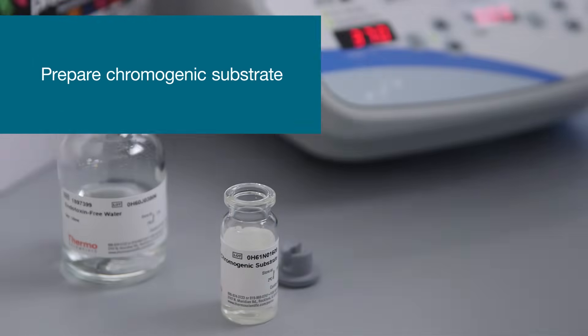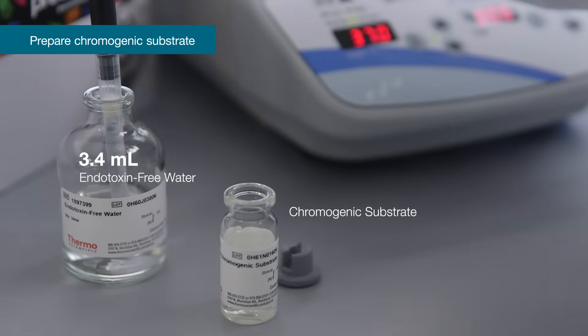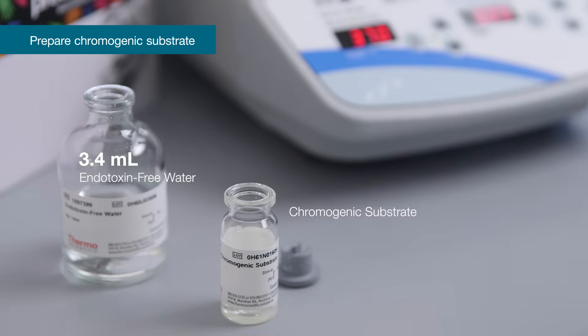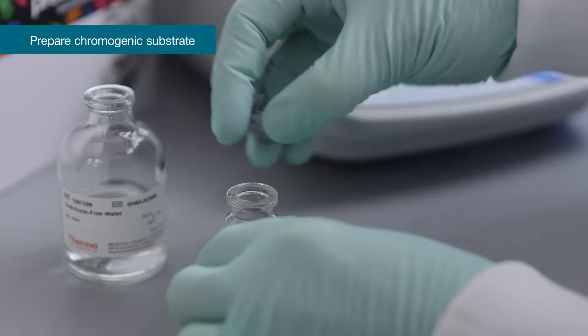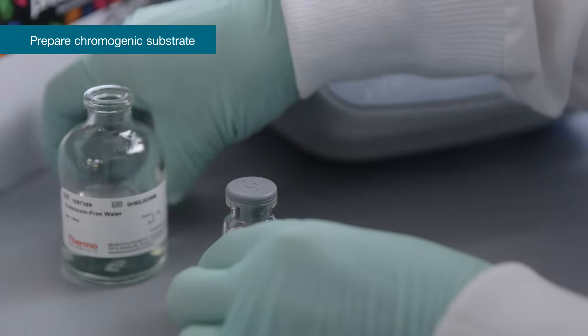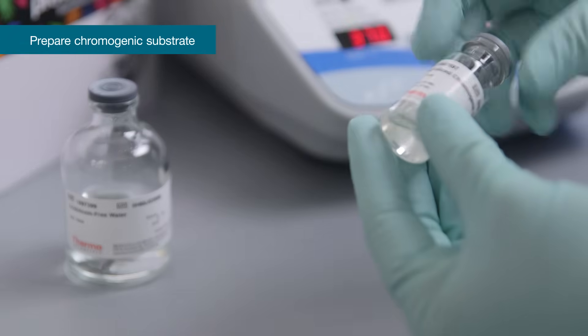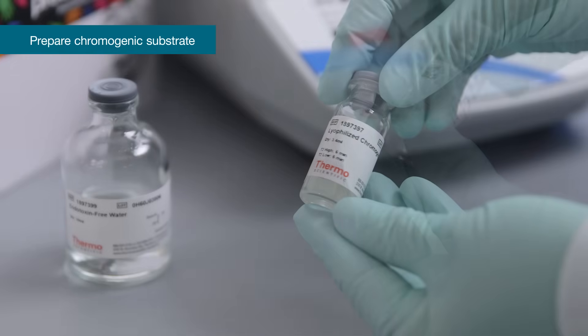Seven minutes before the end of time T1, reconstitute the chromogenic substrate with 3.4 ml of endotoxin-free water. Mix gently by tilting and swirling the vial. If more than one vial is required, pool two or more vials before use. Pre-warm the reconstituted chromogenic substrate to 37 degrees Celsius for 5 minutes before dispensing into plate wells.